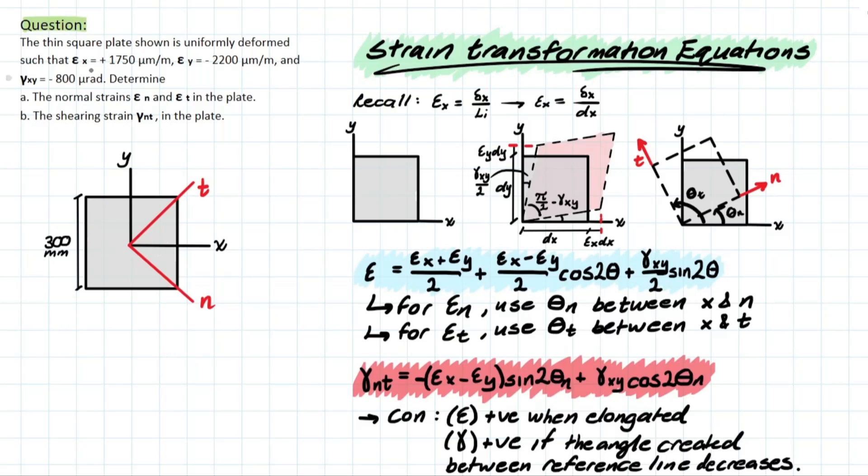So today we have a question that goes: the thin square plate shown is uniformly deformed such that strain of x, strain of y, and shearing strain are given. And we're going to show a picture of what that's going to look like on this original element. So it's asking us to determine the normal strain epsilon n, or normal strain n, and normal strain t in the plate. It's also asking for the shearing strain with respect to that n t coordinate.